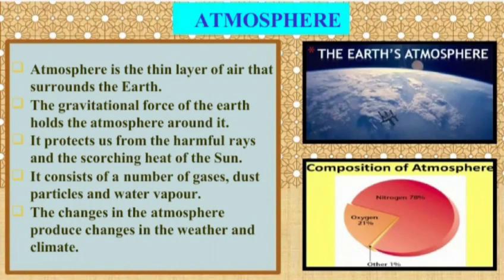Now let us see the atmosphere. Atmosphere is the thin layer of air that surrounds the earth. The gravitational force of the earth holds the atmosphere around it. It protects us from the harmful rays and the scorching heat of the sun. It consists of a number of gases, dust, and water vapor. The changes in the atmosphere produce changes in the weather and climate.